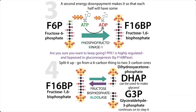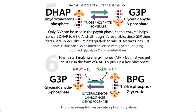Phosphorylating fructose-6-phosphate gives us fructose-1,6-bisphosphate, which is now perfectly poised to be cut in two, yielding two phosphorylated halves that we can interconvert. Breaking it in half takes an enzyme called fructose-bisphosphate aldolase. The two pieces — dihydroxyacetone phosphate (DHAP) and glyceraldehyde-3-phosphate (G3P) — can be interconverted through triose-phosphate isomerase. We keep using the G3P, taking it forward in the pathway, which drives the interconversion of DHAP into G3P.